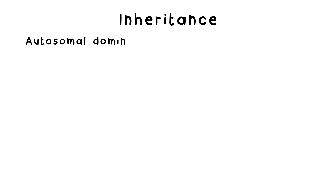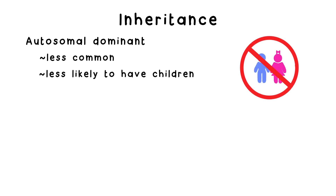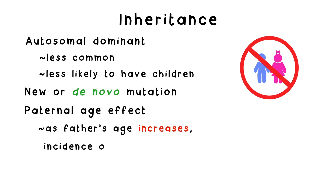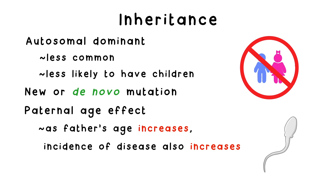Apert Syndrome is either inherited in an autosomal dominant manner — which is less common because affected individuals are less likely to have children — or arises via a new, de novo mutation. The disorder exhibits a paternal age effect, where the incidence of the disease increases with the father's age. This is thought to happen because of a selective advantage of sperm progenitor cells that have acquired these FGFR2 mutations.